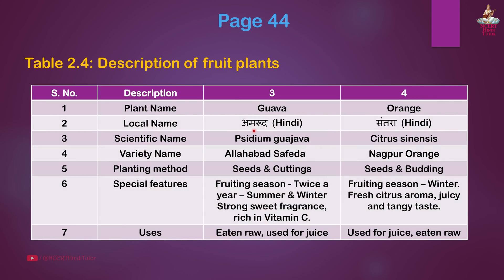Third fruit plant: Guava. Local name: Amrood in Hindi. Scientific name: Psidium guajava. Variety: Allahabad Safeda. Planting method: Seeds and cuttings. Special features: Fruiting season twice a year — summer and winter; strong sweet fragrance; rich in Vitamin C. Uses: Eaten raw and used for juice.